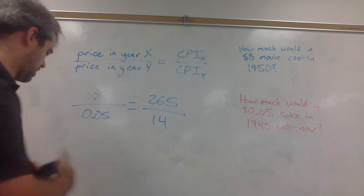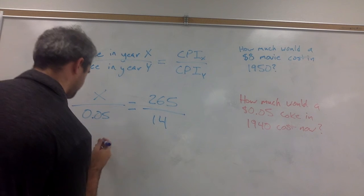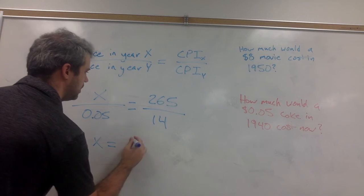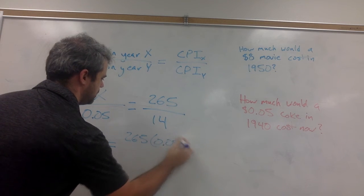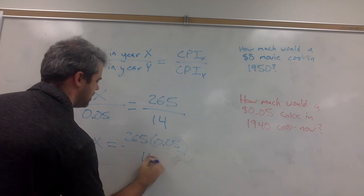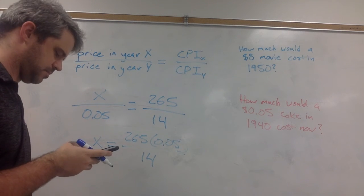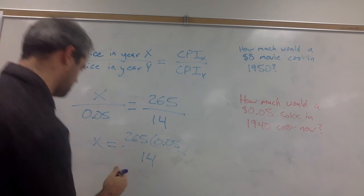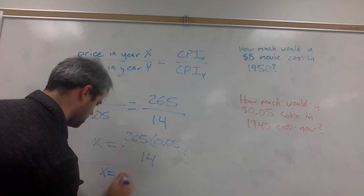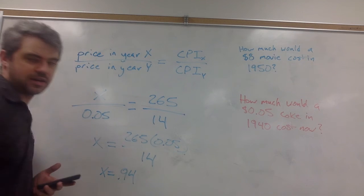Okay, so, again, we cross-multiply here. We wind up with 265 times 0.05 divided by 14. So 265 times 0.05 divided by 14 is approximately 94 cents.